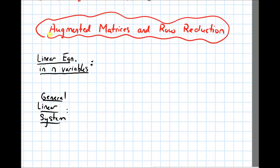In this video, we're going to talk about how do we convert a linear system of equations into what's called an augmented matrix, and then how do we simplify that using row reduction.